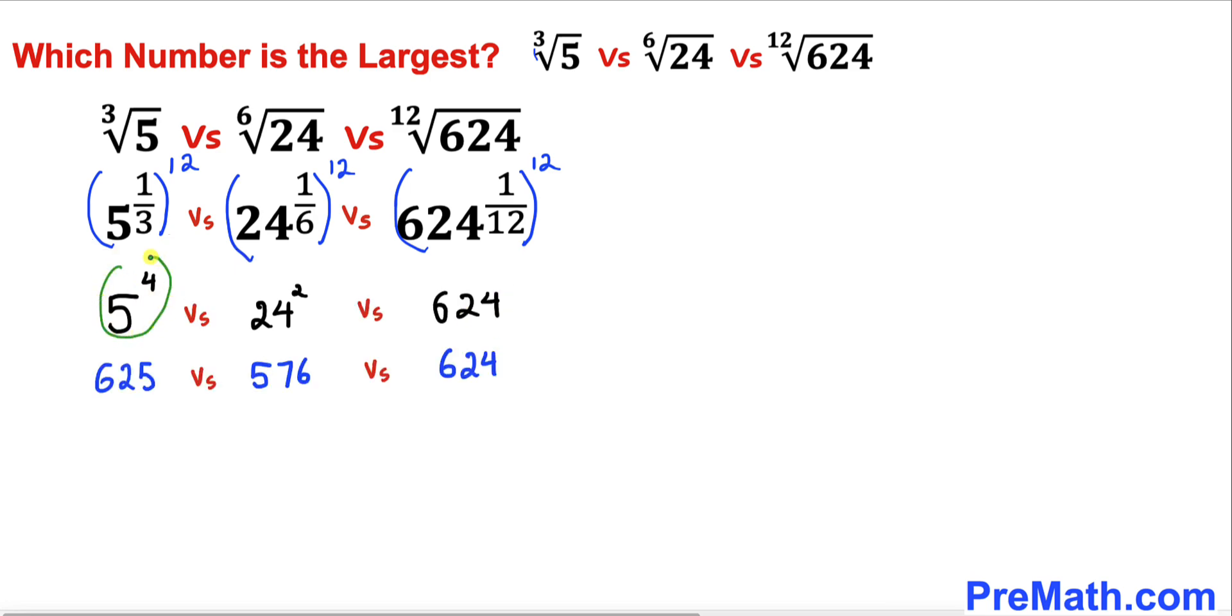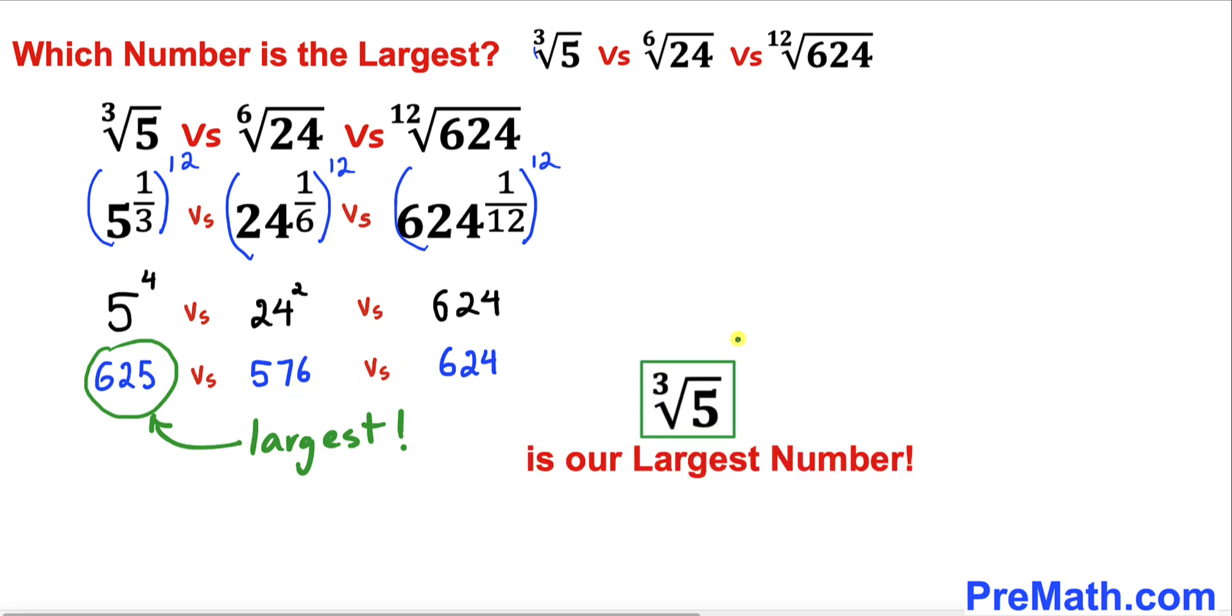We know that 5 to the power 4 is 625, 24 to the power 2 is 576, and now we can see that 625 is the largest number among these three. Therefore, we conclude that this cube root of 5 is going to be our largest number.